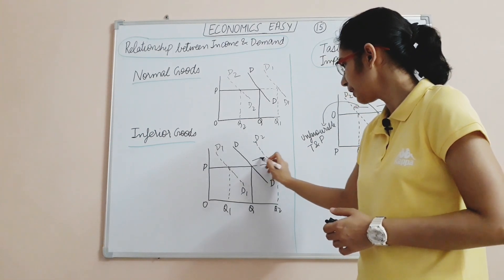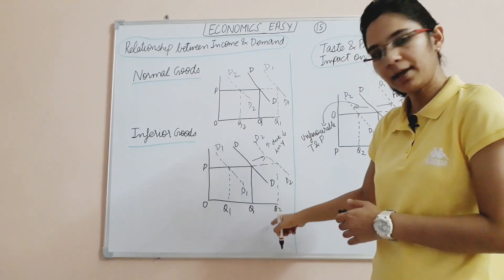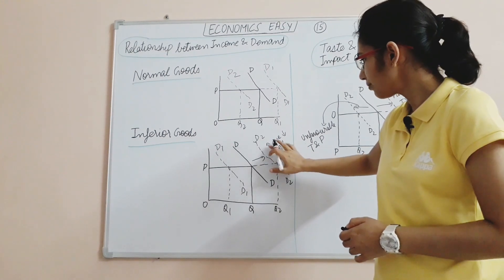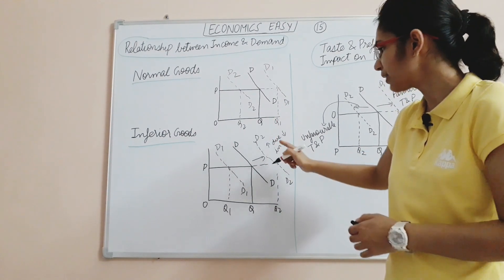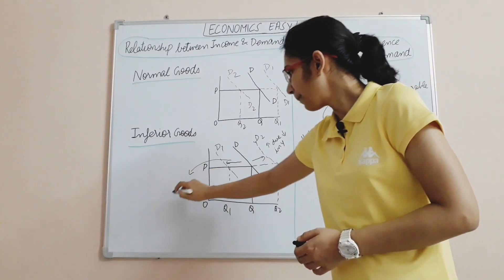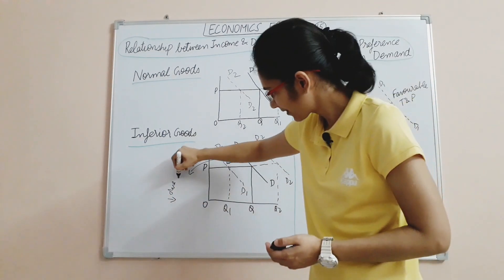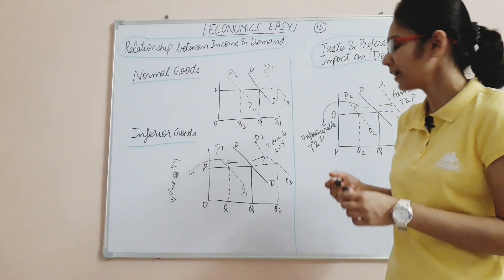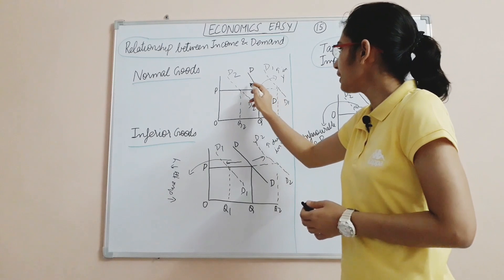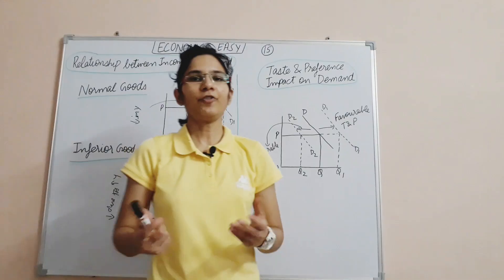For inferior goods, when income decreases, quantity demanded increases — from OQ to a higher quantity — because due to a decrease in income, consumers upgrade to or rely more on low quality food. The demand curve shifts forward when income decreases for inferior goods.